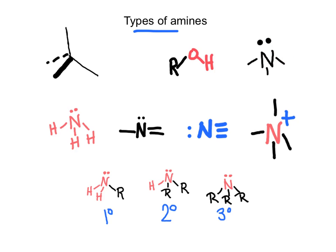Nitrogen can always make three bonds. We see the molecule of ammonia making three single bonds with hydrogens. We can also have one double bond and one single bond, or a triple bond with a lone pair. When nitrogen is making four bonds, we will have to place a plus charge.